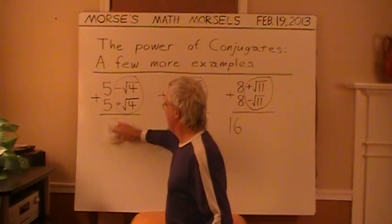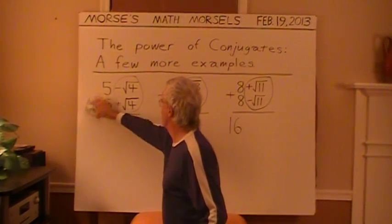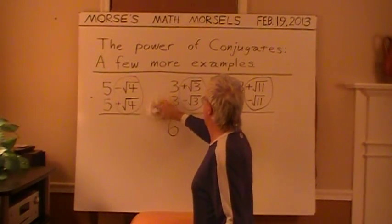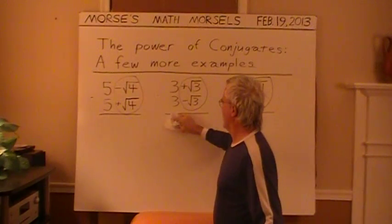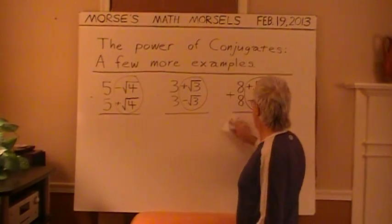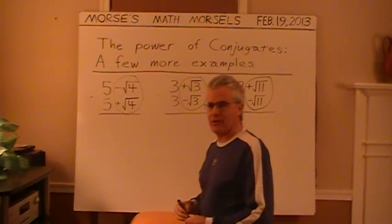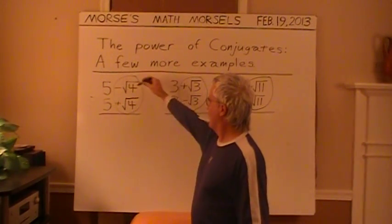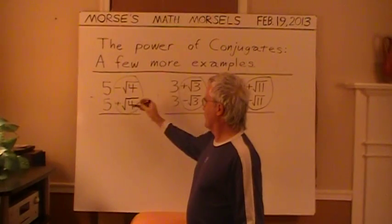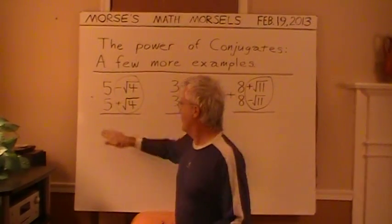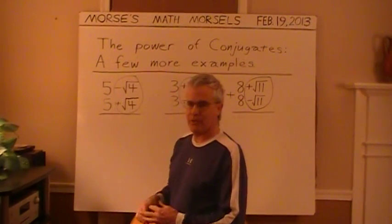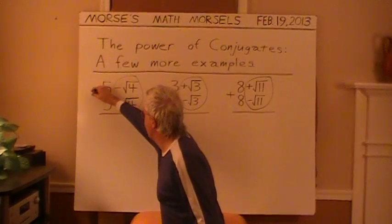I'm going to erase these for the time being and go back to multiplication of conjugates. My other examples used whole numbers and complex numbers. Here I'm just using radicals. You'll probably notice that square root of 4 just equals 2, but I left it in radical form just to show that it works with any radicals in any form.